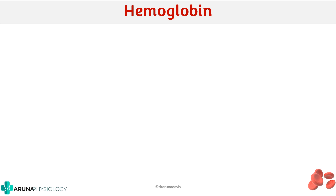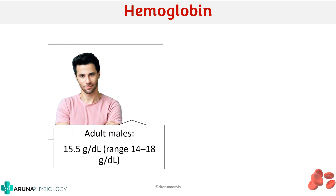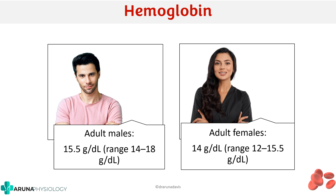The normal value of hemoglobin in adult males is around 15.5 gram per deciliter, whereas in females it is a bit less — around 14 gram per deciliter. The difference is because in adult males the male hormone testosterone stimulates erythropoiesis, and that is why adult males have a higher value of hemoglobin.